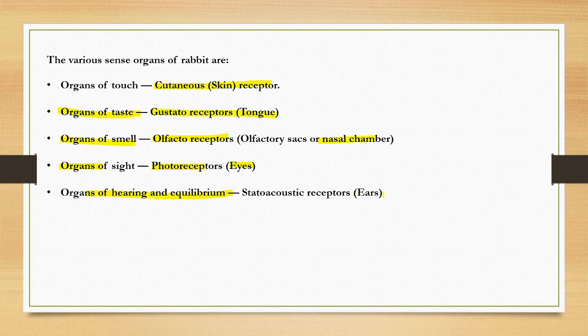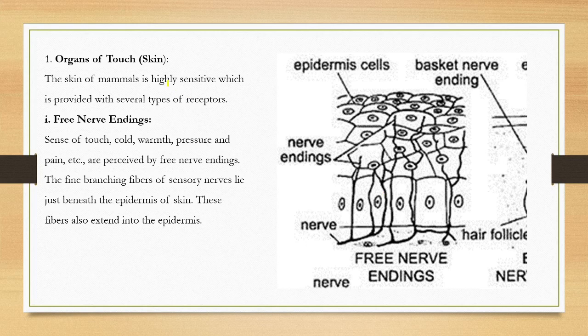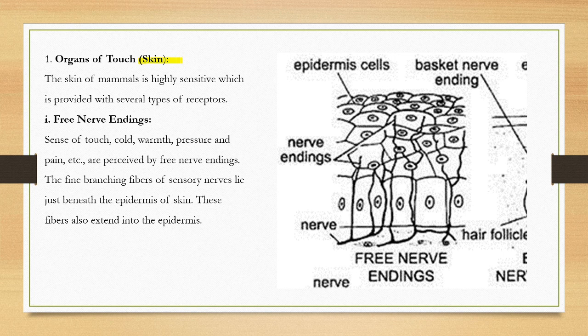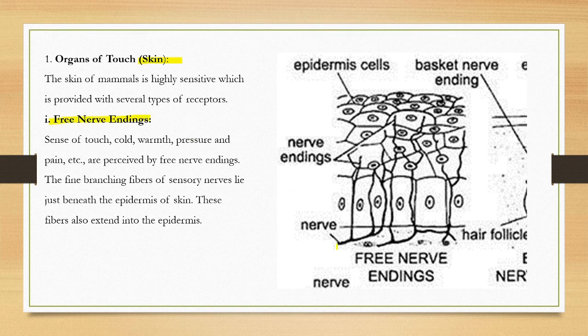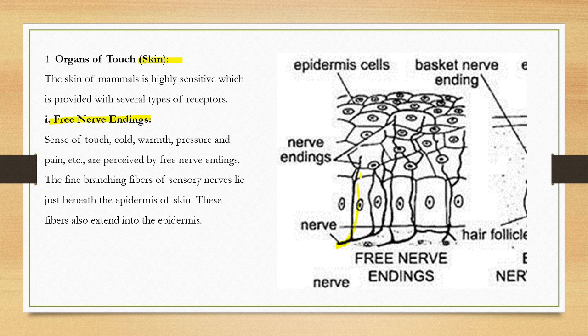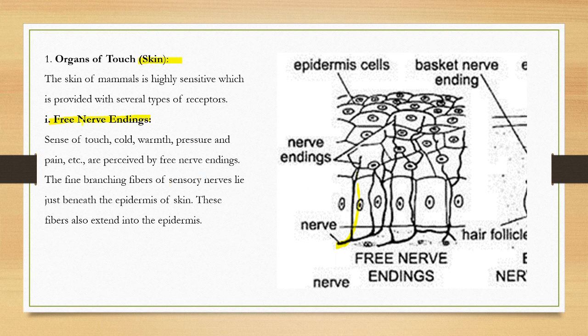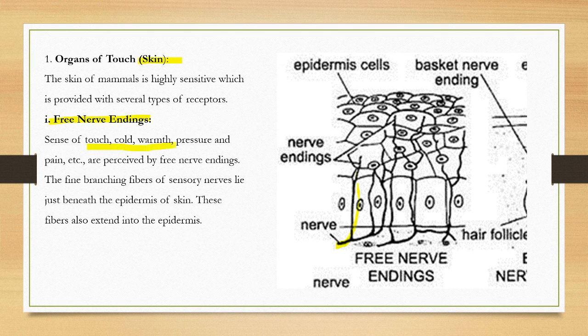These are the five organs of sensory perception. Let's look at the first one, the organs of touch. These receptors are present on the skin under the epidermis. Four kinds of sensory receptors. The first one is called free nerve endings. These are the nerve endings under the epidermis. Free nerve endings are responsible for touch, cold, warmth, pressure, pain, etc.